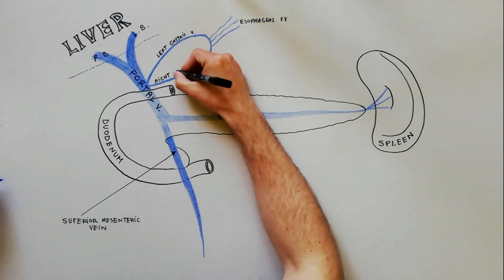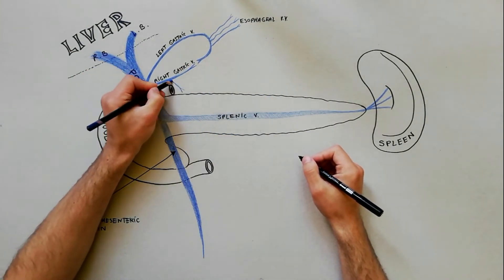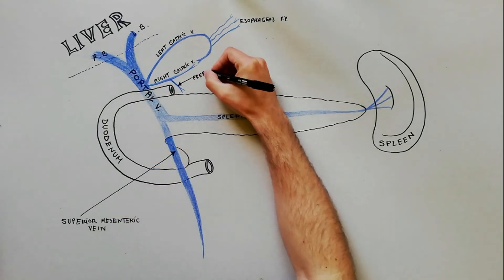The right gastric vein, smaller than the previous one, drains in turn the prepyloric vein of Mayo.